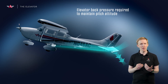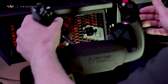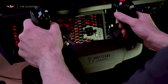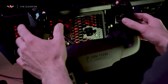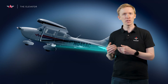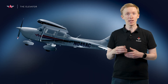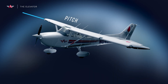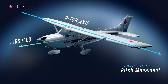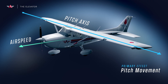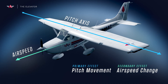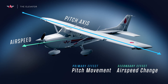On most control devices such as joysticks and yokes, this is simulated with a spring force, which induces the feeling of resistance the further you move the pitch control input away from neutral. We will return to this in the climb and descent session. In summary, the elevator's primary effect causes the aircraft to pitch around the pitch axis, pointing the nose either up or down, and the secondary effect causes changes to our airspeed.